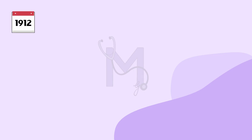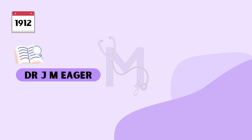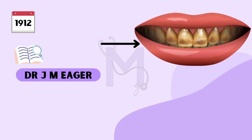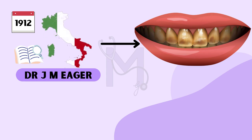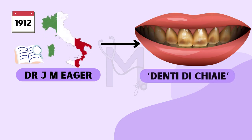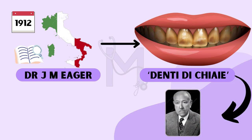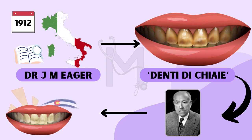Later, in 1912, McKay discovered a paper written by Dr. J.M. Eager, reporting the unusual occurrence of brownish-coloured stains among the majority of residents in Naples. Eager had termed these stains as 'denti di chai.' This further broadened McKay's curiosity about the mottled enamel he had discovered in Colorado Springs.